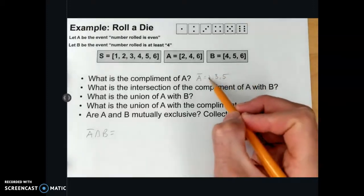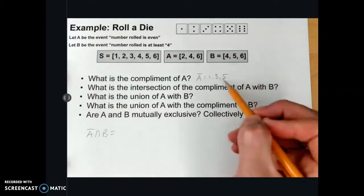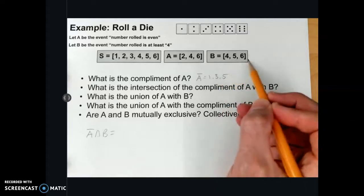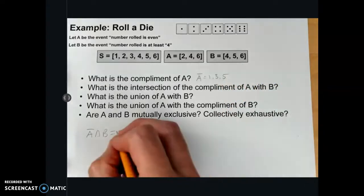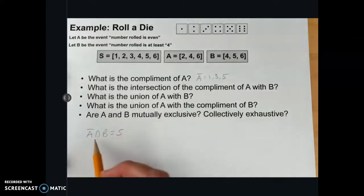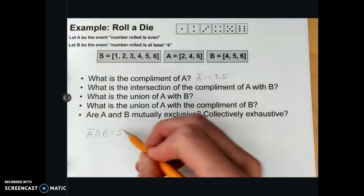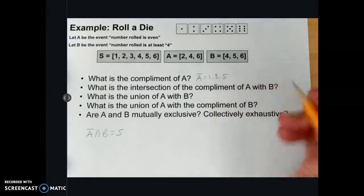So we've got 1, that doesn't qualify because that's not in B, 3, not in B, and 5. So the answer is 5. Because what is in both A complement and B? 5. Keep going.